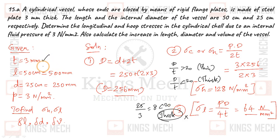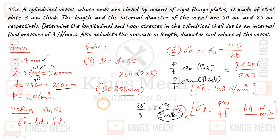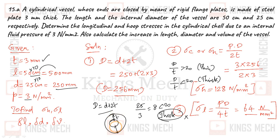But wait — that calculation is wrong. From the given data: thickness t = 3 mm, length L = 50 cm = 500 mm (converted by multiplying by 10), and internal diameter d = 25 cm = 250 mm. We need the outer diameter D, which equals d plus 2 times thickness: D = d + 2t.